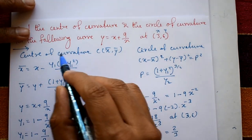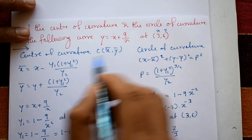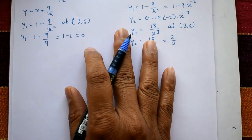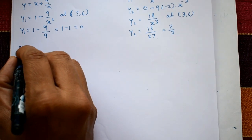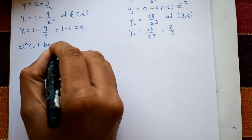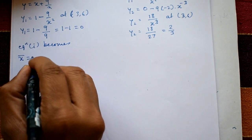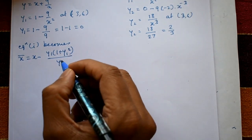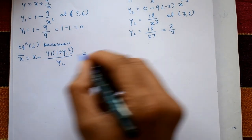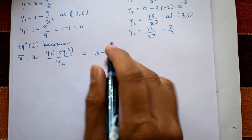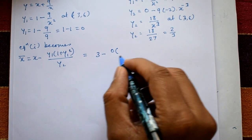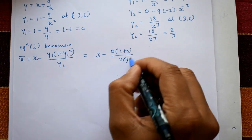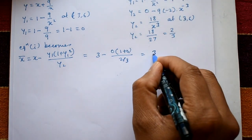Now calculate the center of curvature. Using equation 1: x̄ = x − y1·(1 + y1²) / y2. Substituting: x = 3, y1 = 0, y2 = 2/3. Since y1 = 0, the entire second term is 0. Therefore x̄ = 3.